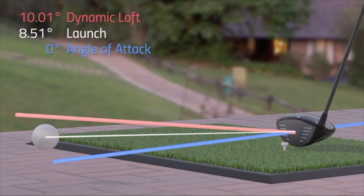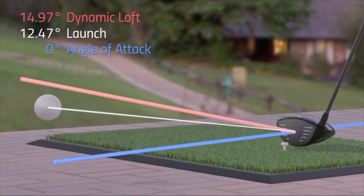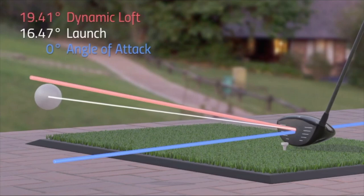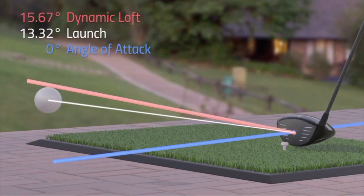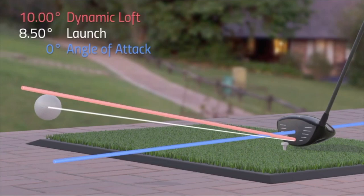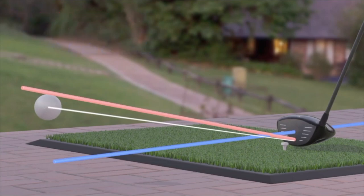It is important to be aware that the angle of attack is calculated from the volumetric center and the dynamic loft is calculated from the club face. So these are being calculated from different points on the golf club.